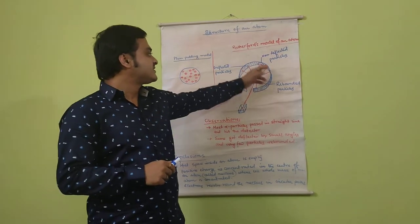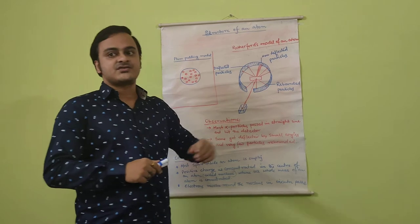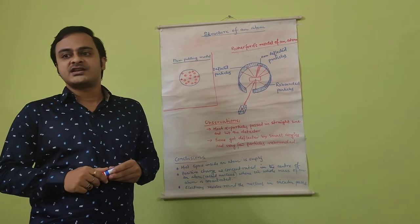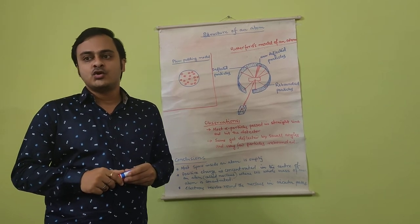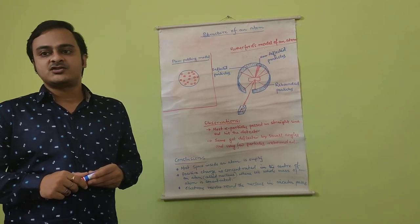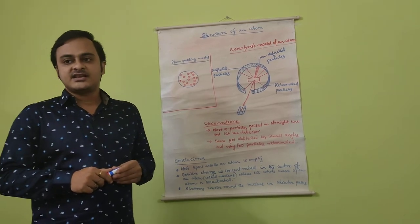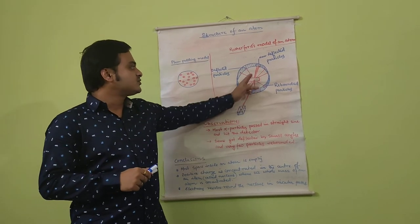For this setup, a fluorescent screen, this semi-circular fluorescent screen, is taken. The screen will glow or emit fluorescent light whenever the alpha particles hit it. So this is how the alpha particles should be traced. Considering the plum pudding model, it was expected that most of the alpha particles would travel in straight lines.